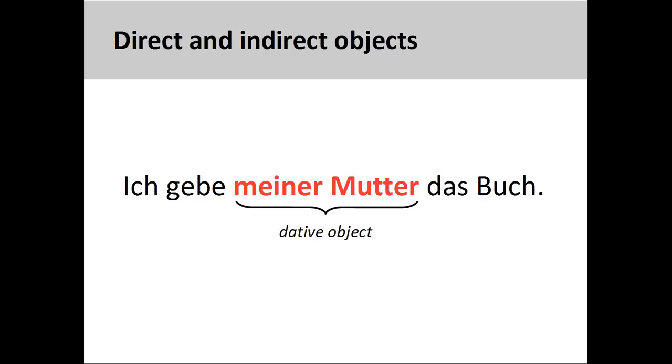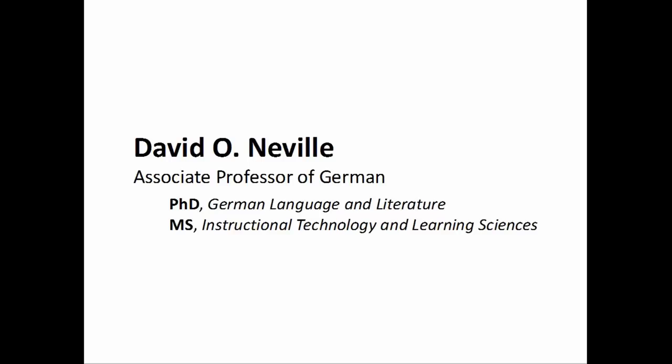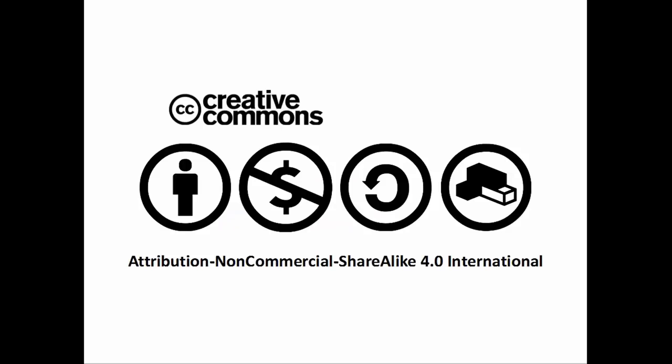When using direct and indirect objects together in a sentence, it is important to maintain the correct order, which we discussed in an earlier presentation. The 5-Minute German Grammar series is produced by David Neville, Associate Professor of German. The videos, scripts, and lecture slides are released under a Creative Commons Attribution, Non-Commercial, Share-Alike 4.0 International License. Don't be a square — remix and share.